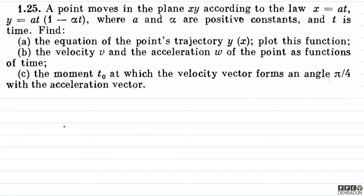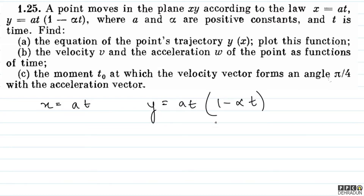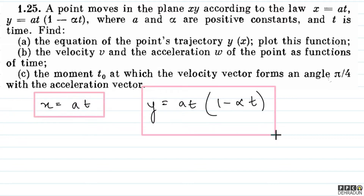So first of all, x = at and y = at(1 − αt). To find the trajectory — y as a function of x — we will eliminate time from the two equations, leaving a relation between x and y.